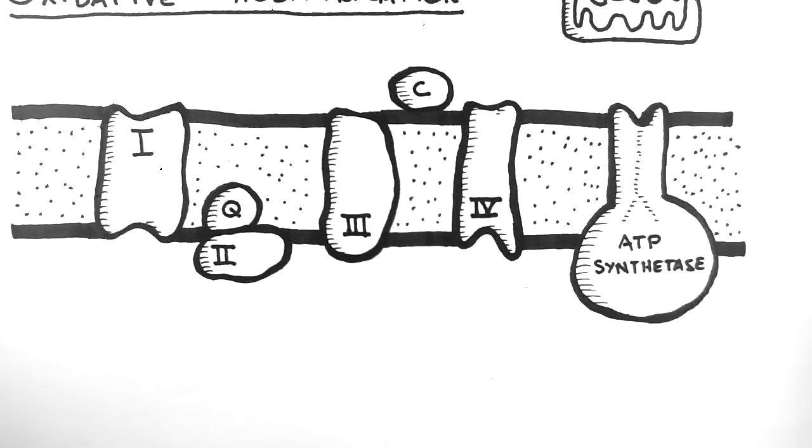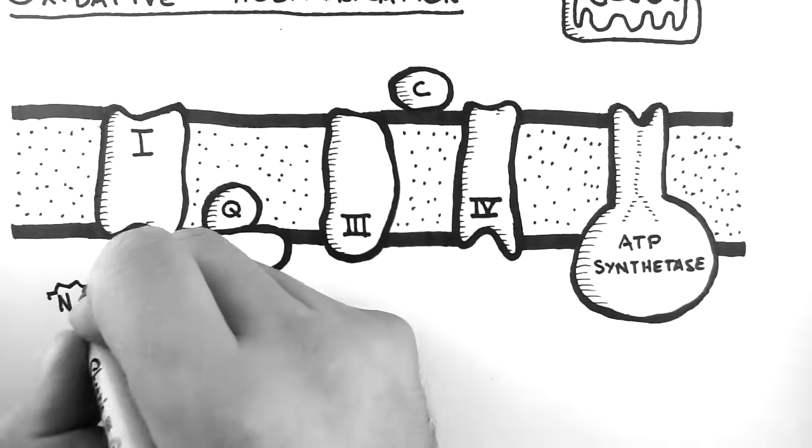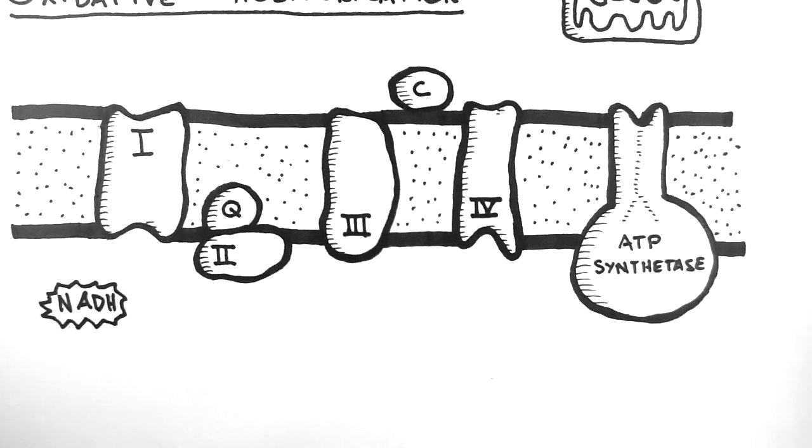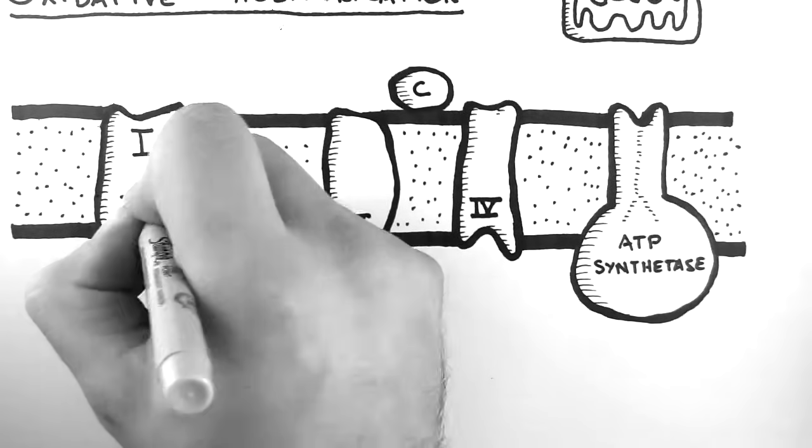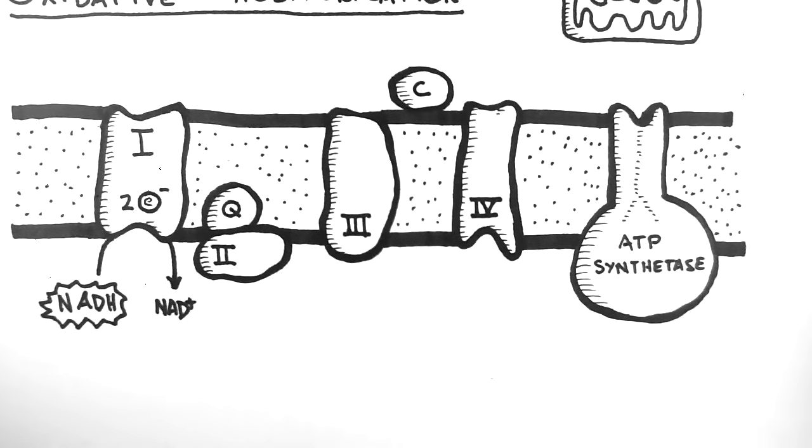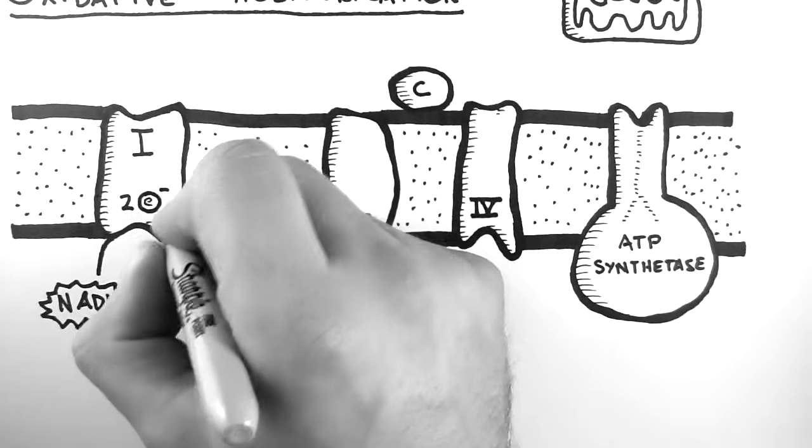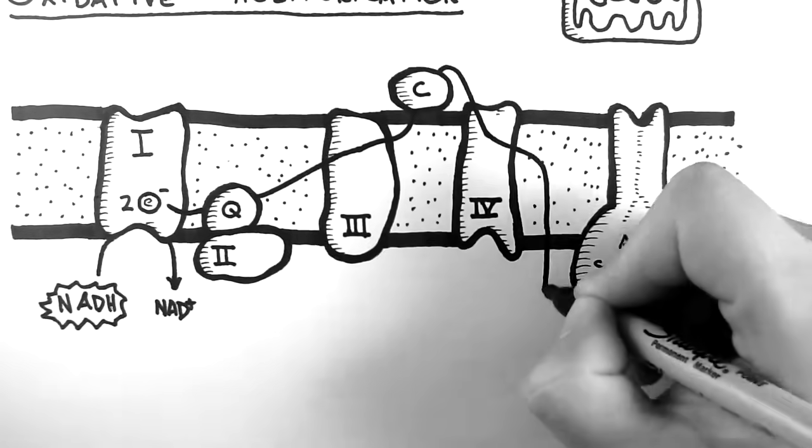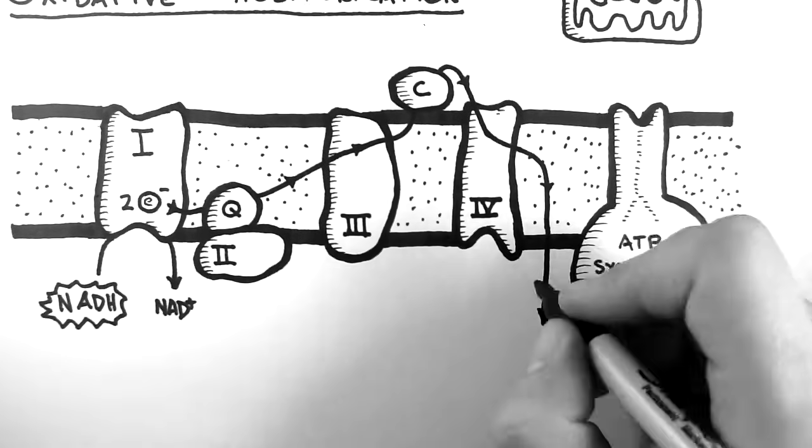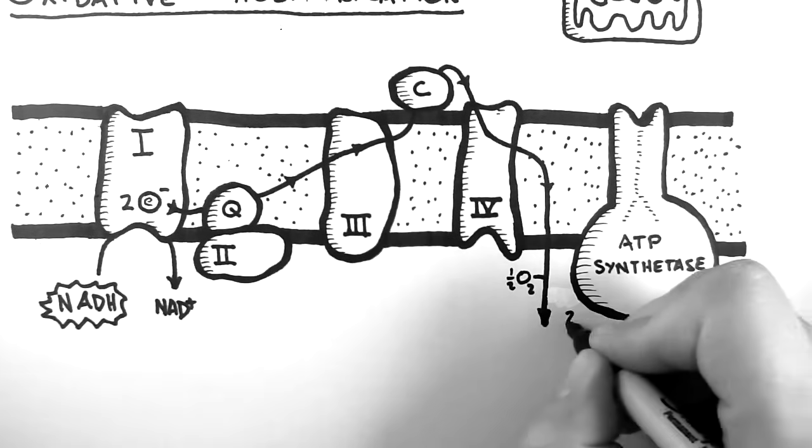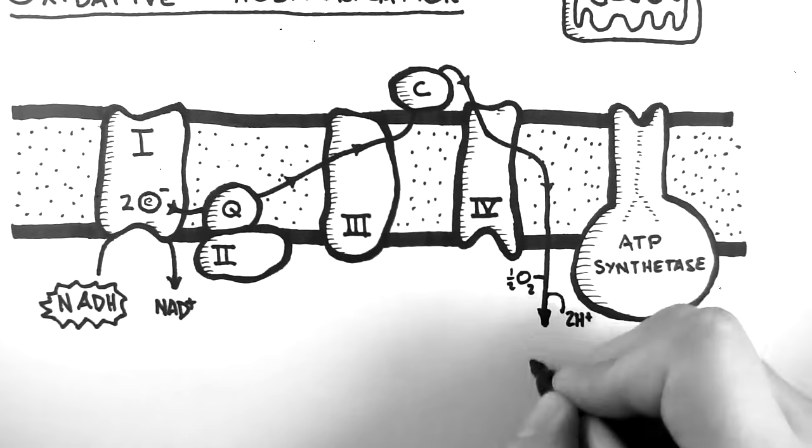So the process begins with NADH, which was produced by glycolysis, beta oxidation, and the TCA cycle. This NADH is oxidized to NAD+, and donates two electrons to the electron transport chain. These two electrons get passed between the complexes like this, and are finally accepted by oxygen. And with a couple of protons, this produces water.